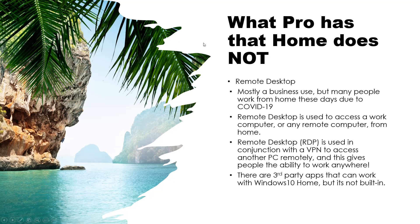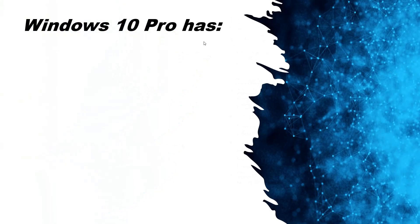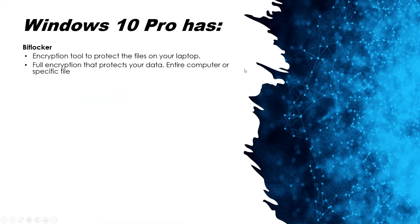There are third-party apps that can work with Windows 10 Home for remote desktop, but it's not built in and I'm not sure how well they work. Windows 10 Pro also has BitLocker, which is an encryption tool that protects the files on your laptop or computer — full encryption that protects your entire computer or a specific file. So if someone steals your computer and tries to access it, they can't get to your files because they're encrypted and require a password.